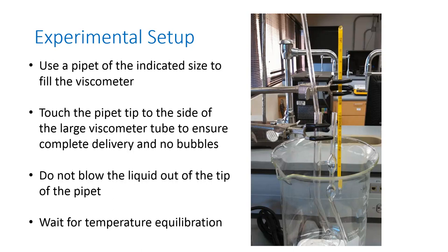So you're going to use a pipette to fill the viscometer through the bigger of the two tubes. You're going to want to touch the pipette to the side of the tube and let the liquid flow down very gently into the viscometer. The reason to do this is because we don't want any bubbles. The polymer solutions you're going to use are very good foam stabilizers, so they will form bubbles and the bubbles will not go away.